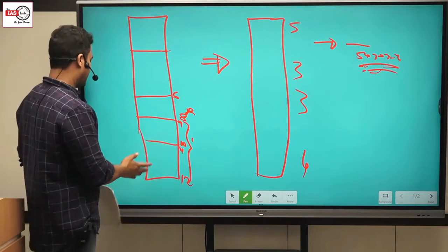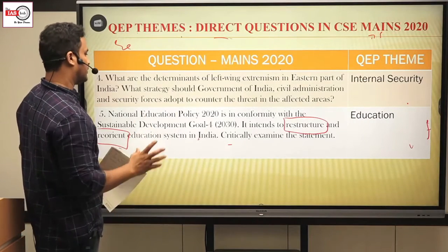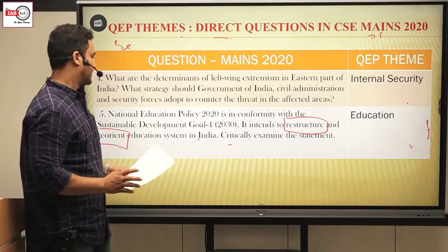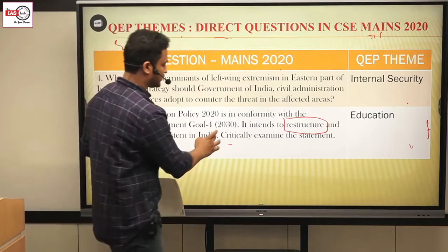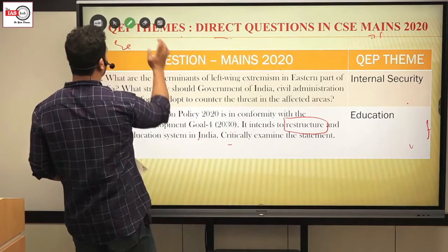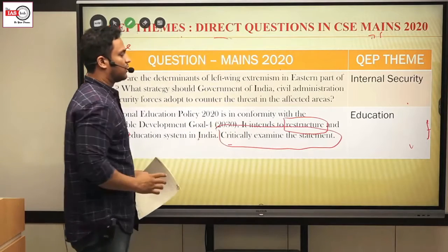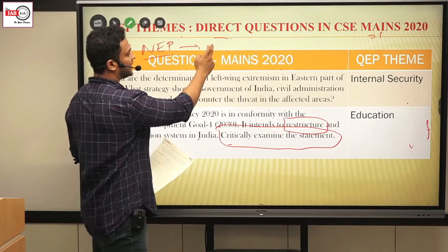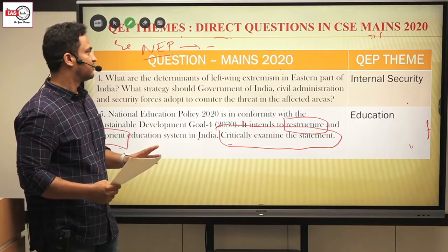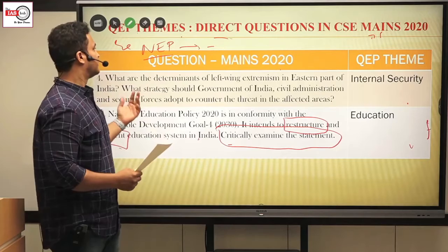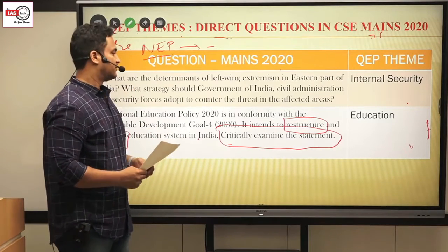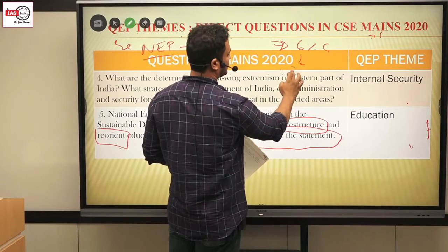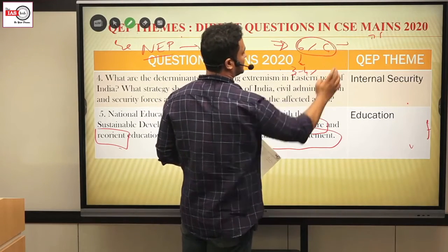I directly copied whatever diagrams, mind maps, and data Sir had given into my answer. The question also said 'critically examine,' so since NEP's positives are commonly written, negatives had to be given too. Sir discussed the negatives as well — for example, NEP says 6 percent of GDP would be given to education, but there is no road map for how this increase would come about when it is currently only around 3 to 4 percent.